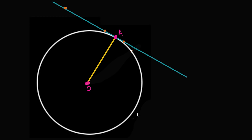We have a circle with center at point O, and a tangent line to the circle — let's call this line L. Point A is where the tangent line intersects the circle, and we've drawn a radius from the center O to point A. What we want to do in this video is prove that this radius and this tangent line intersect at a right angle.